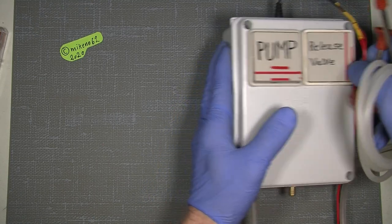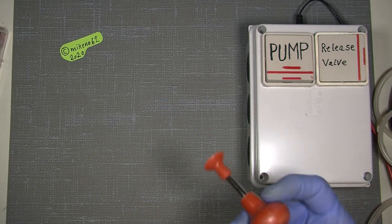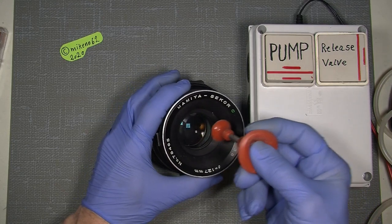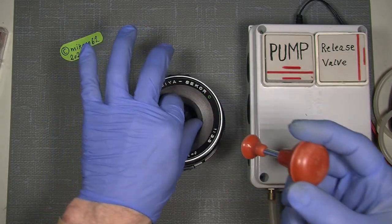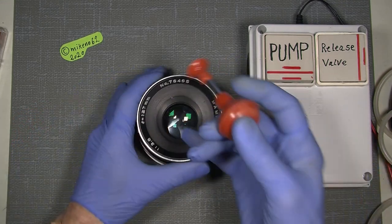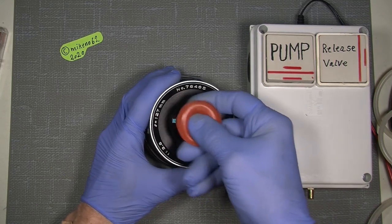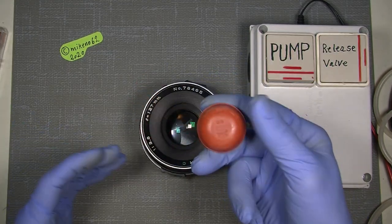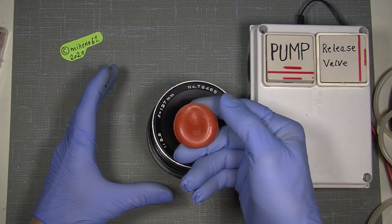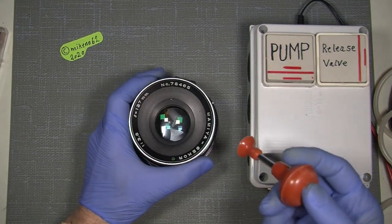But how good is it actually? How strong is this little vacuum? If we can compare to this one. This is a normal Japanese hobby tool and it works good for many things when working with lenses. But if I take this one, can it lift the whole? Not really. So it's not strong enough.